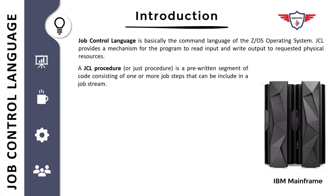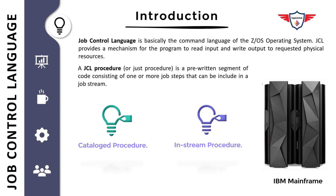The term JCL stands for Job Control Language and is basically the command language of the z/OS operating system. JCL provides a mechanism for the program to read input and write output to requested physical resources. A JCL procedure is a pre-written segment of code consisting of one or more job steps that can be included in a job stream. In short, a JCL procedure is a piece of code that is fully tested and can be invoked from any JCL as and when it is required.